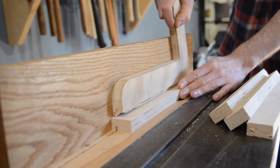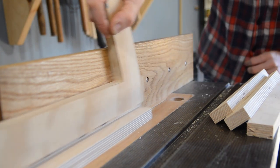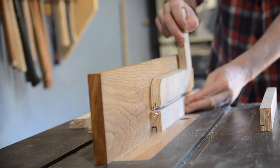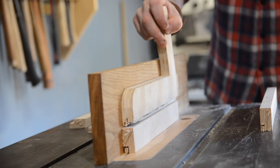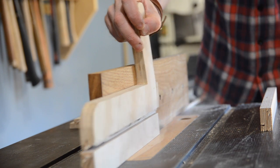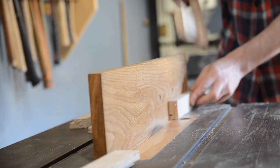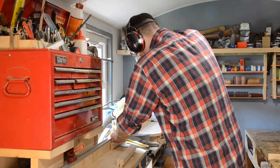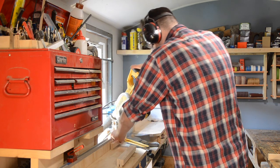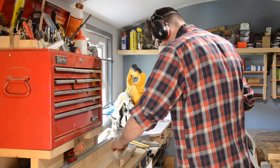Then I make a shallow pass about one centimeter in and then I can turn it on its side, raise the blade a little and make another pass to cut a rebate in it.